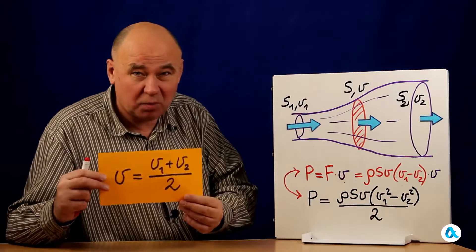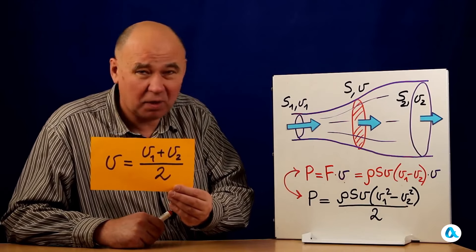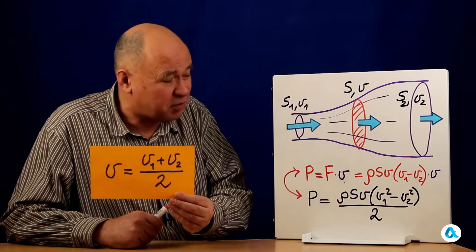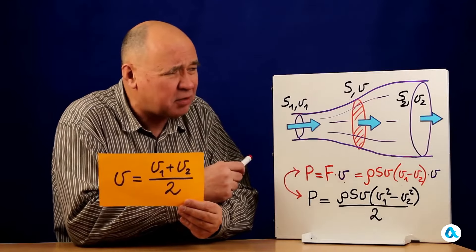Thus, we determine that the airspeed at the disc in this particular model is equal to the arithmetic mean of the airspeeds before and after the disc. Specifically, this model shows that the airspeed is the average.